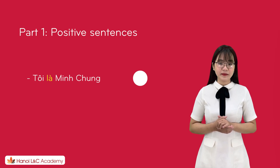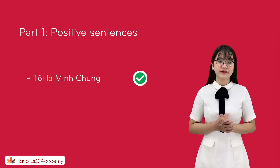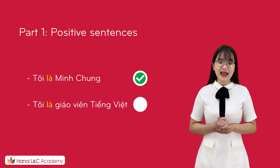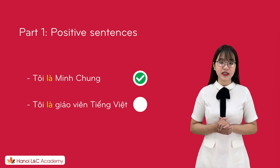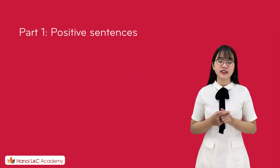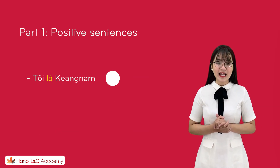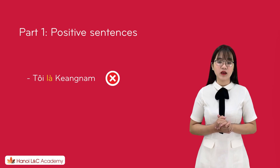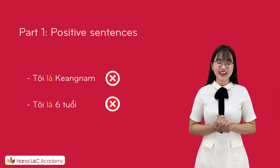For example: Tôi là Minh Trung. Tôi là giáo viên tiếng Việt. Tôi là tỷ phú. But you don't write it like: Tôi là Cang Nam. Tôi là 6 tuổi. Don't forget to practice this at home.